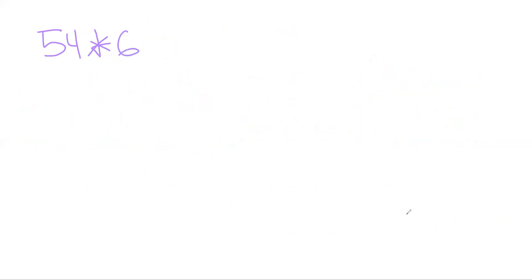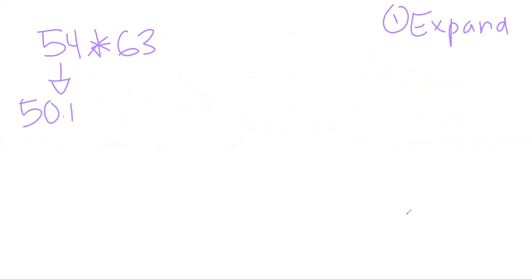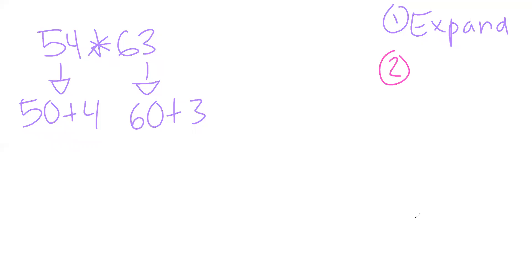Let's do another one — 54 times 63. Same process: expand first. This helps me create my rows and columns for the area model. So 54 expands to 50 plus 4, and 63 expands to 60 plus 3.